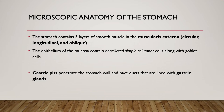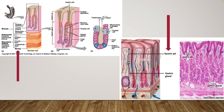The mucosa of the stomach makes these invaginations that dip down, called gastric pits, and further down we have gastric glands. You can see them on the left and right images — the gastric pits are these small invaginations that dip down, and then further down you have the gastric gland region.